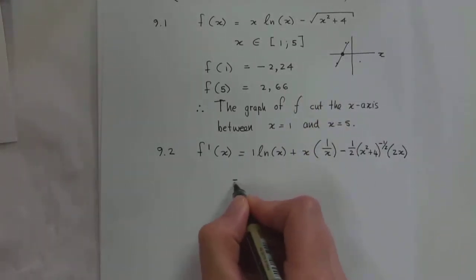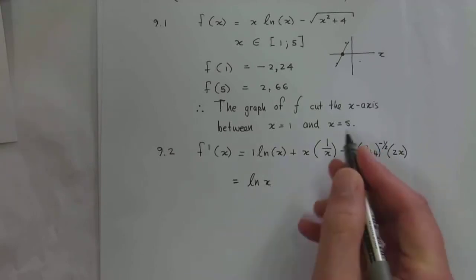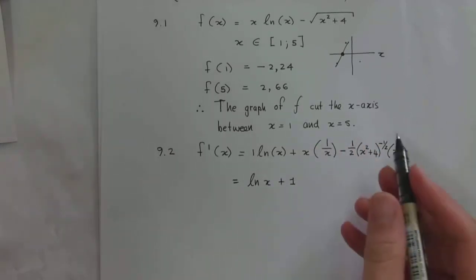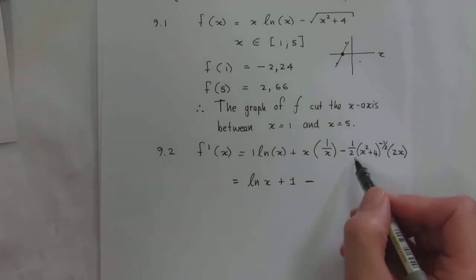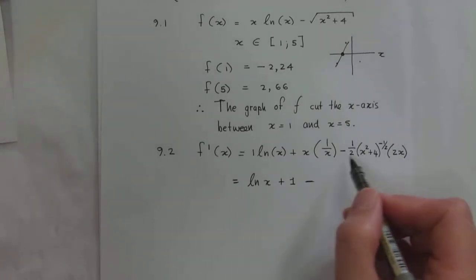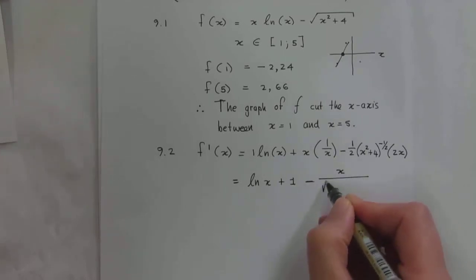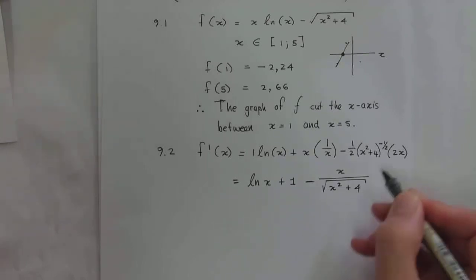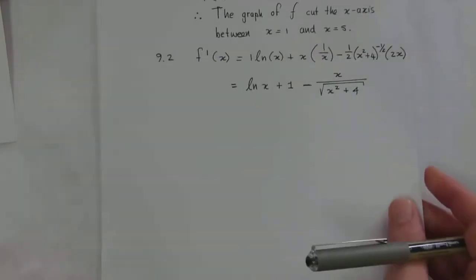Cleaning it up: I've got ln(x), and x times 1/x is just 1, then minus — multiplying a half by 2 gives 1, so I've got x over the square root of x squared plus 4 because it's to the power of negative a half. So the simplified derivative is: ln(x) + 1 − x / √(x² + 4). That might be easier to use in the Newton-Raphson iteration.